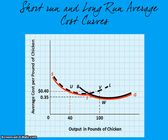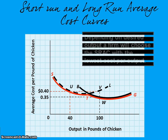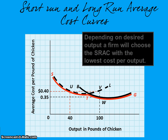The solid red line represents the long-run average total cost curve. Depending on desired output, a firm will choose the short-run average cost with the lowest cost per unit. If they know all their possible short-run average cost curves, they can determine what's best in the long run and make changes over time as they're able to exit fixed cost commitments and shift to the best possible scenario to decrease average cost of production.